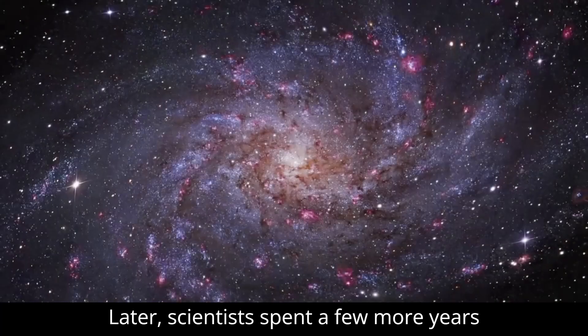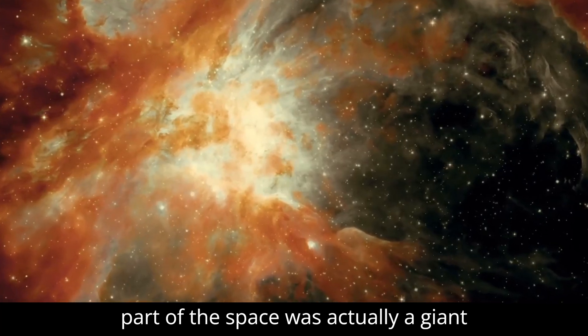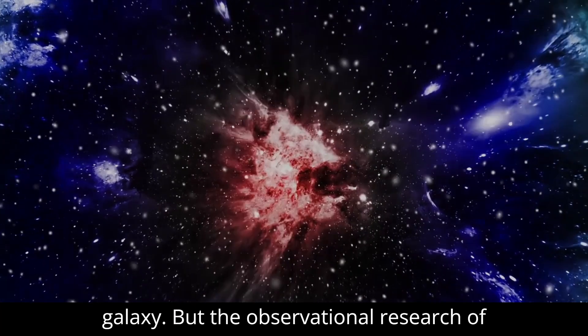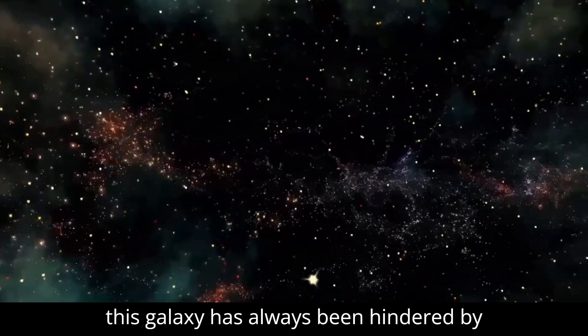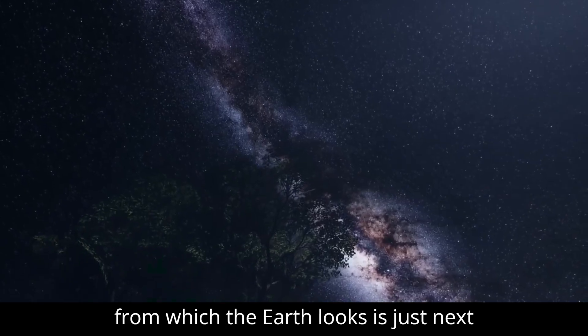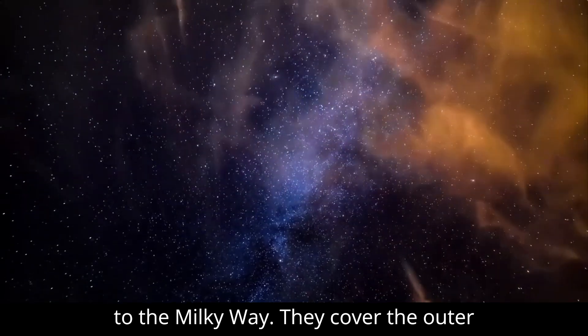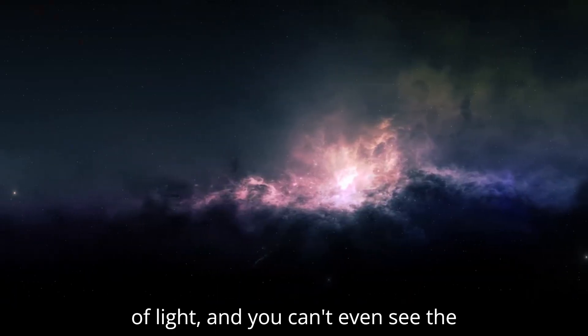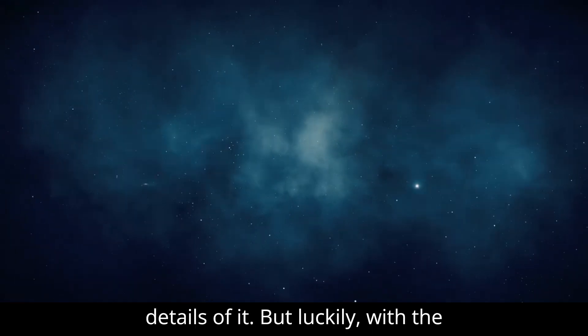Later, scientists spent a few more years to find that the central area of this part of space was actually a giant galaxy. But observational research of this galaxy has always been hindered by unknown reasons. Because the direction from which Earth looks is just next to the Milky Way, they cover the outer sky of the Milky Way. It's just a matter of light, and you can't even see the details of it.